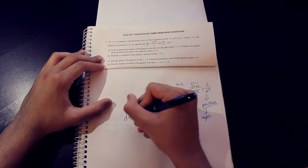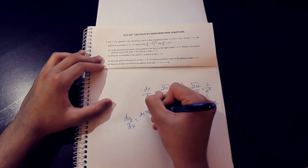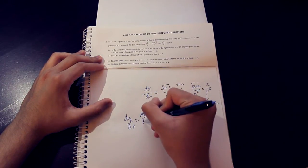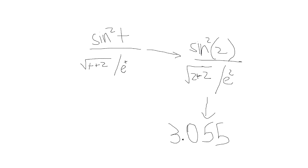It asks us to find the slope of the particle's path at t equals 2. The slope of the path would be dy dx. This equals dy dt over dx dt. So now that we have that, plug in t equals 2 to both of those, and then you should get an answer that is 3.055.